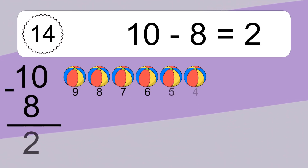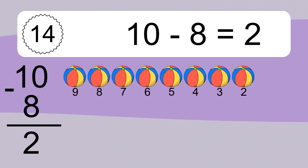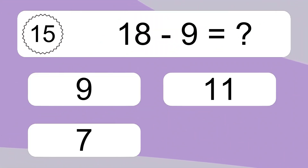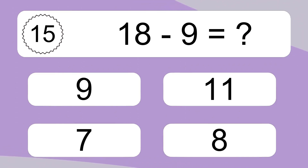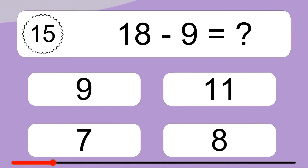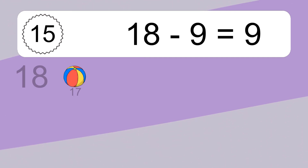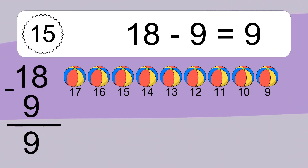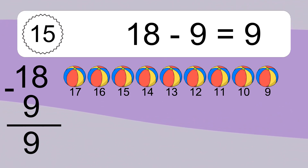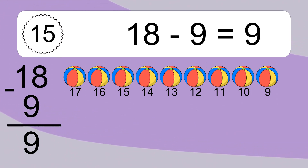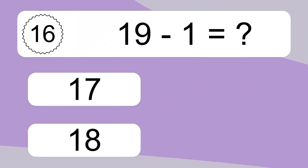10 minus 8 equals 2. Let's count it: 9, 8, 7, 6, 5, 4, 3, 2. 18 minus 9 equals what? 10 minus 9 equals 9. Let's count it: 17, 16, 15, 14, 13, 12, 11, 10, 9.